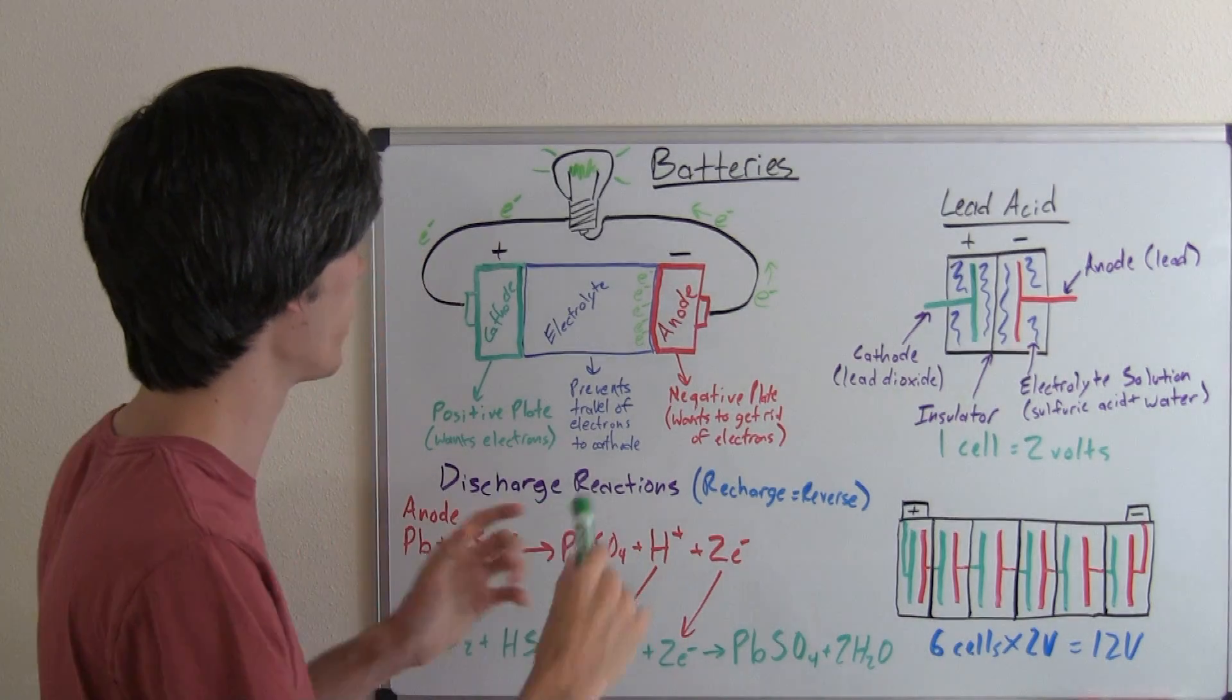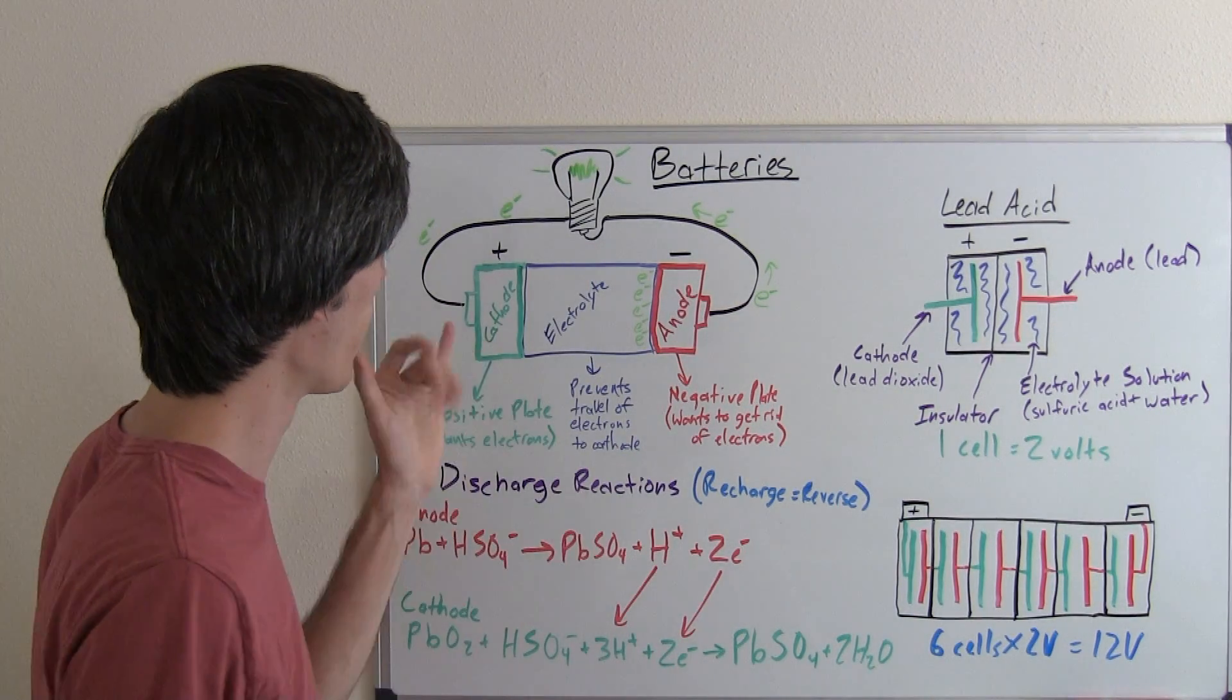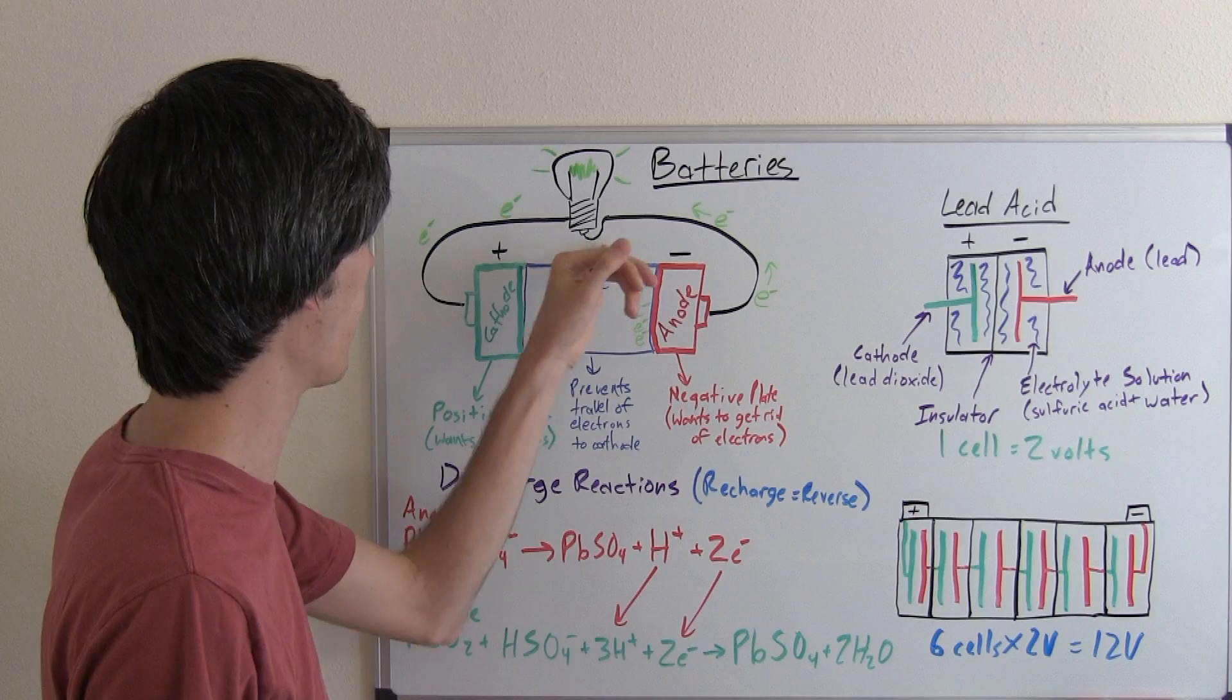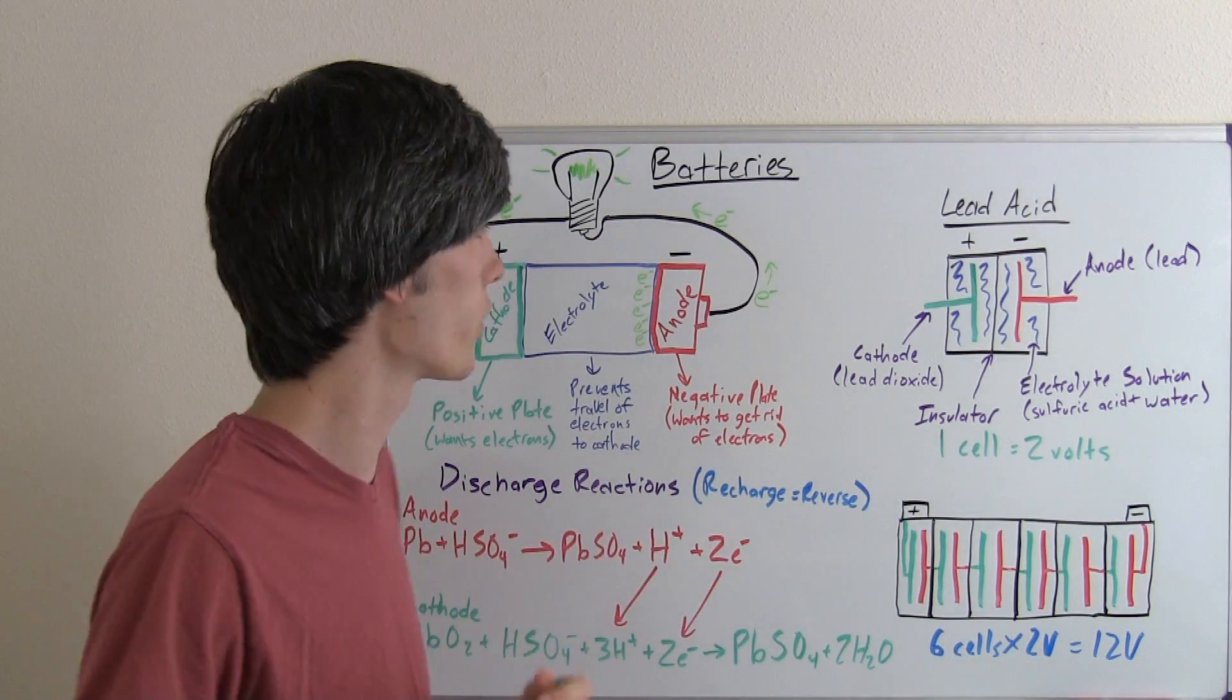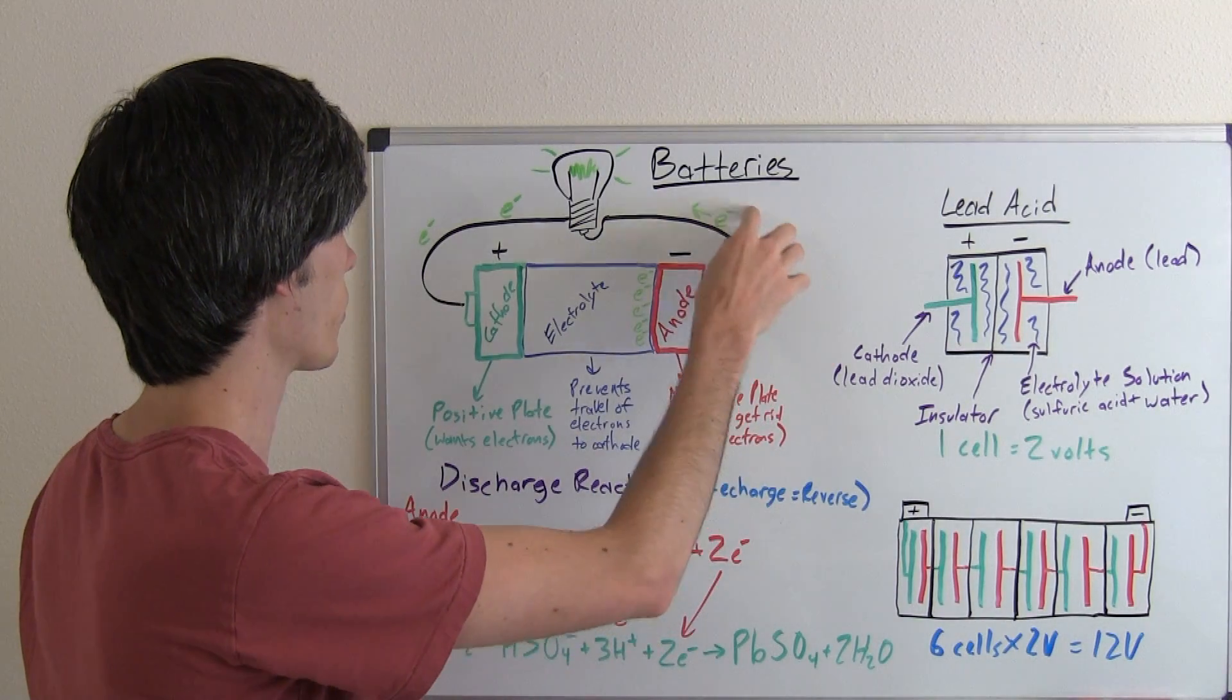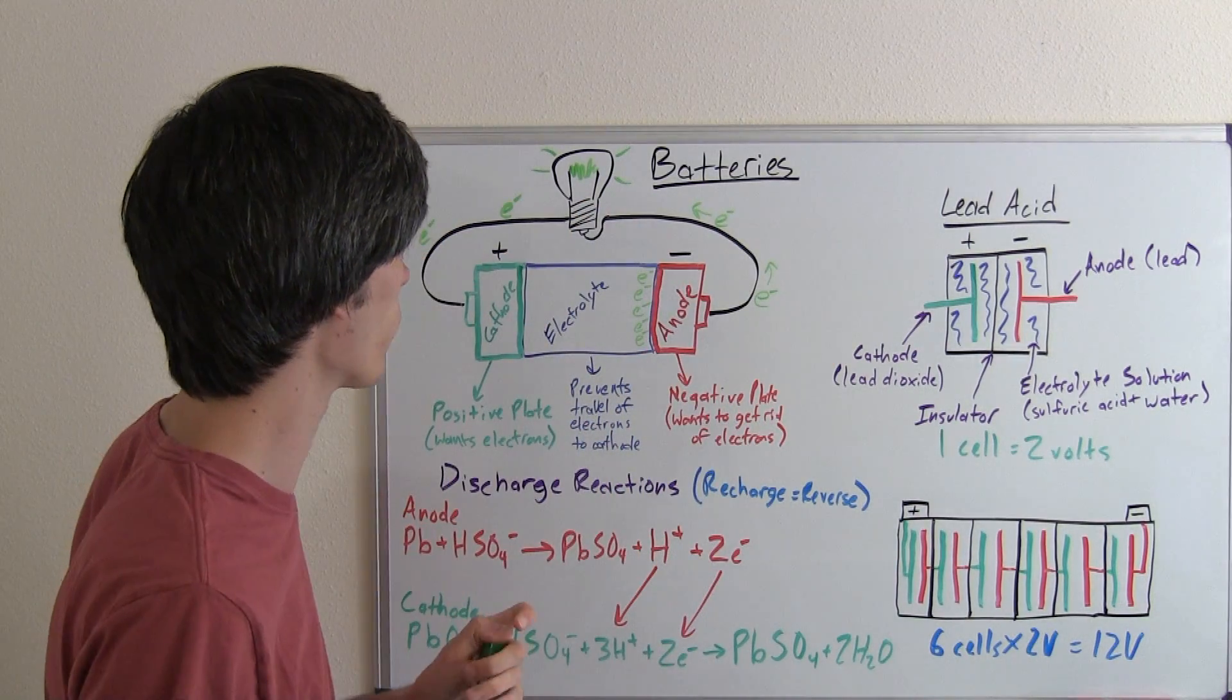And you may be wondering now, well I've always seen current flows from positive to negative. And that is true, current does, as the convention flow, from positive to negative. But because the charge is negative of that flow, the electrons are actually going back the other direction.